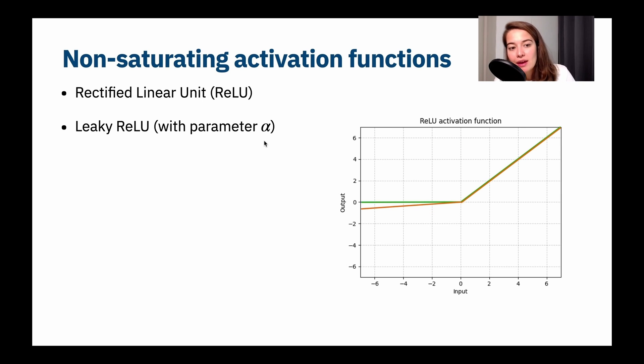So depending on the parameter alpha, you can change how, I mean, it will never be saturating again because it's always going to keep going with a certain slope, but you can determine that yourself. So this is another hyperparameter that you have to decide.